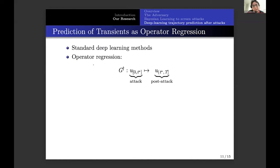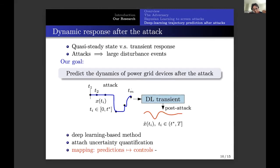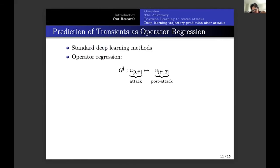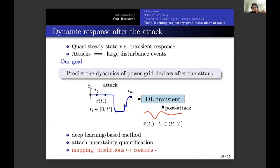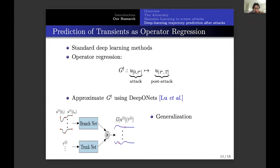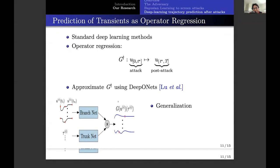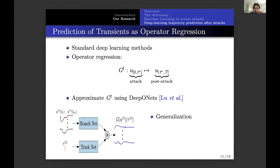So, what we do is we use a method called operator regression. Essentially, we construct the mapping between the trajectories that have some information about the attack, this trajectory, to a trajectory that knows a trajectory of what happens after the attack. And in order to approximate this operator, we use what is called DeepONets. This is a different kind of deep learning method that was recently proposed by Lu Lu at Brown University.